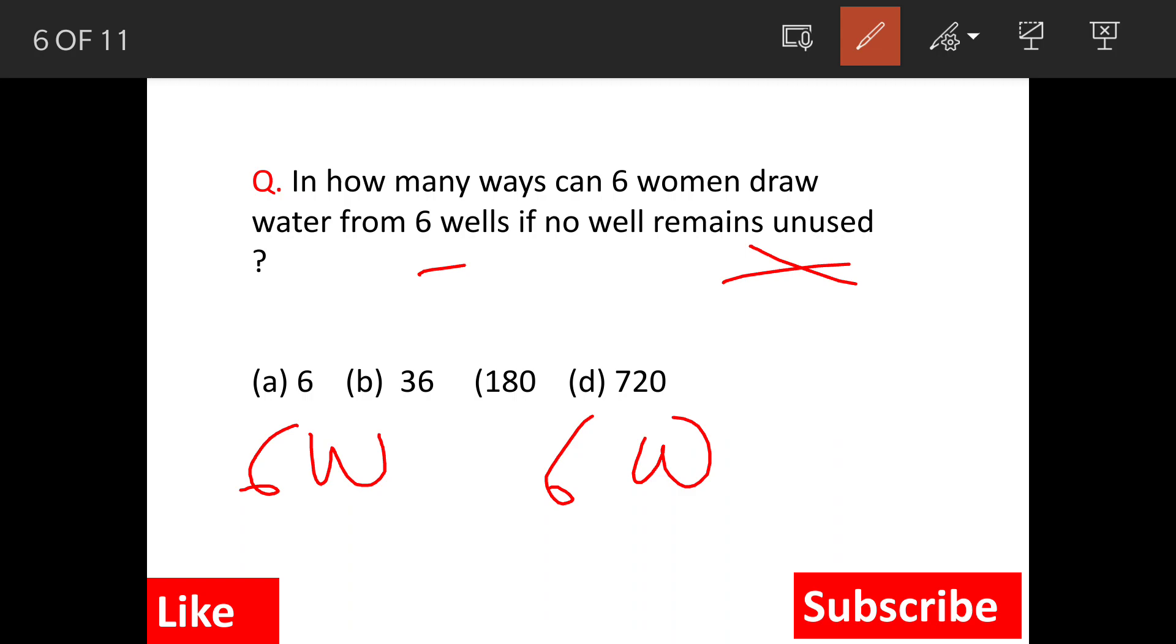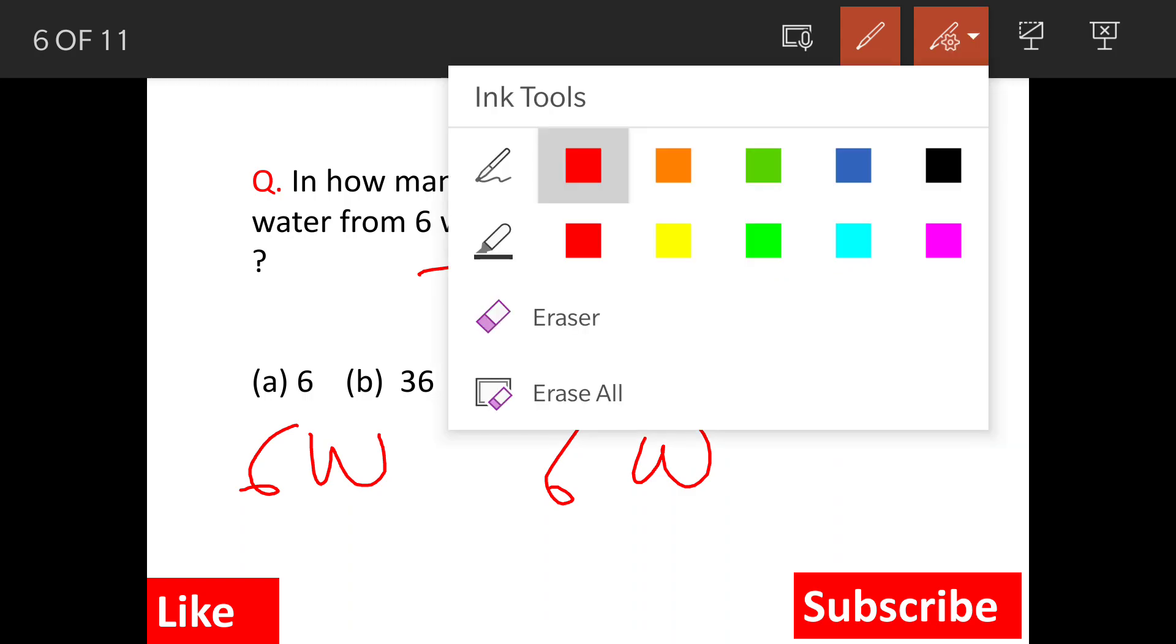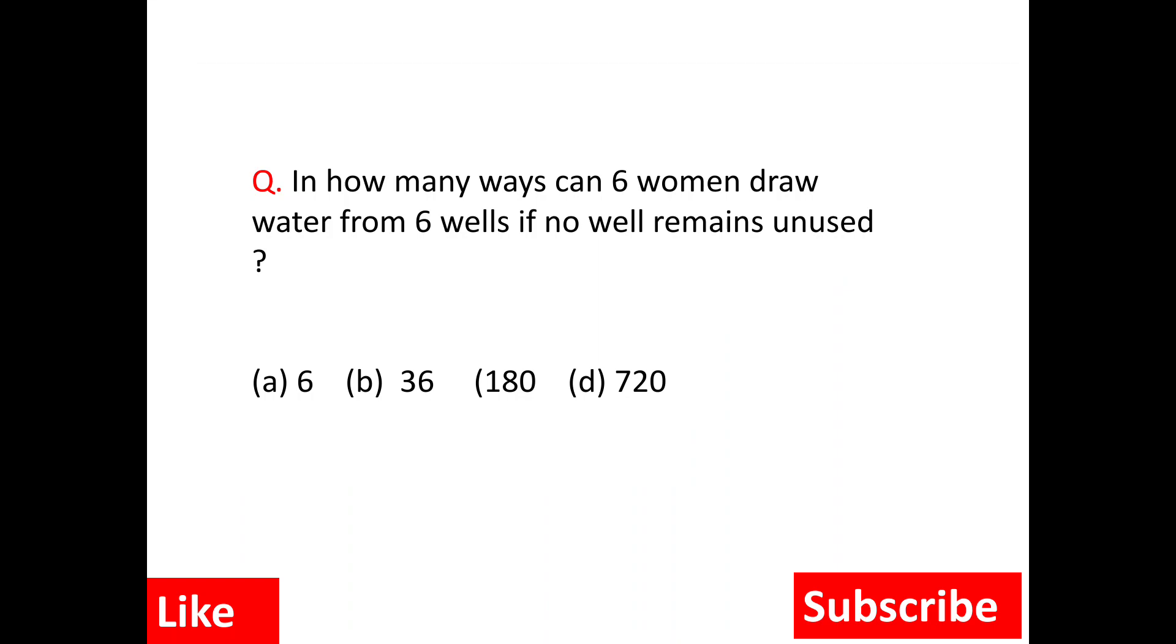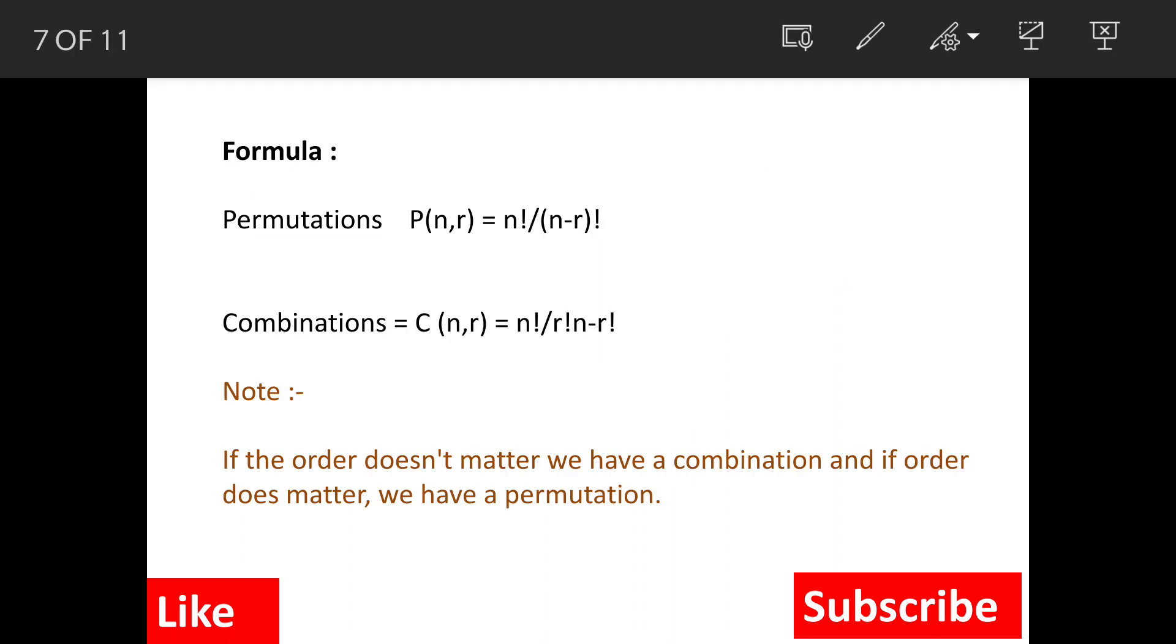So in this manner, how many combinations, how many ways are possible? The question belongs to permutations and combinations, and these are the formulas for permutation and combinations. Now just remember that permutations are larger than combinations because in permutations the order does matter.